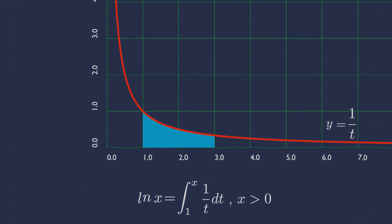So, from the fundamental theorem of calculus, ln x is just the area under the curve of the function y equals 1 by t, from t equals 1 to t equals x.